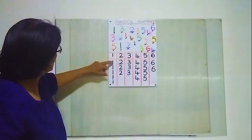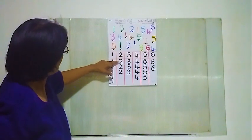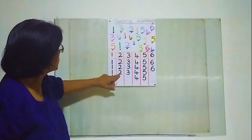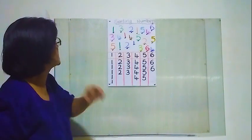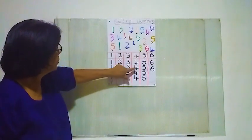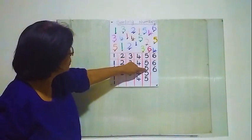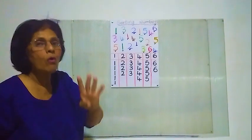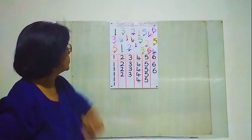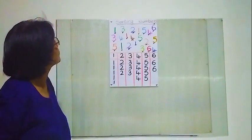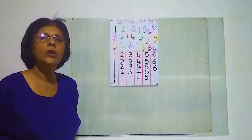Now we'll see how many numbers there are. How many 1's? 1, 2, 3, 4, 5 — five 1's. 2's: 1, 2, 3 — three 2's. How many 3's? 1, 2, 3 — three 3's. How many 4's? 1, 2, 3, 4 — four 4's. How many 5's? 1, 2, 3, 4 — four 5's. How many 6's? 1, 2 — two 6's. Now you have learned sorting numbers. I hope children you enjoyed the lesson. Thank you for listening. Thank you.